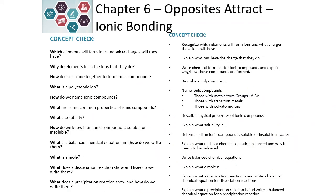Hopefully through this chapter you have learned about what charges are formed from different elements on the periodic table and the polyatomic ions that exist, how to connect those ions together into ionic compounds, how to name them, and the properties these ionic compounds have. We've learned about solubility, whether or not something will dissolve in solution, how to write balanced chemical reactions, what a mole is, and how to write dissociation and precipitation reactions. This has been a very productive chapter learning about ionic bonding.